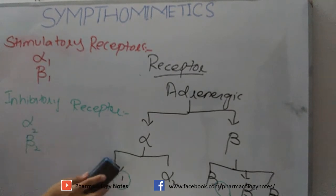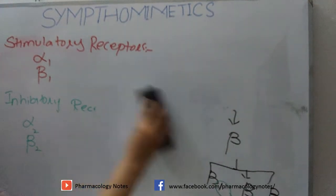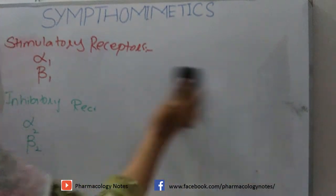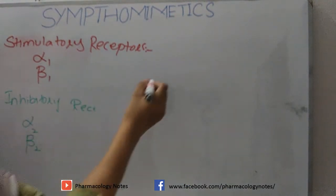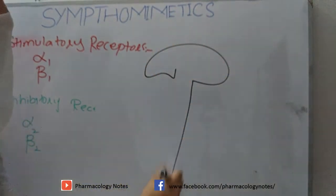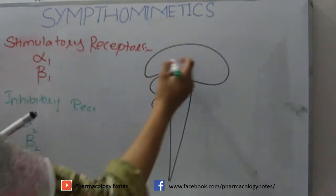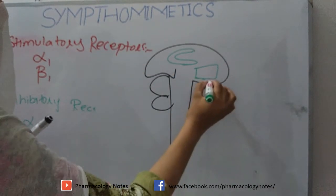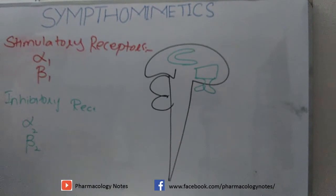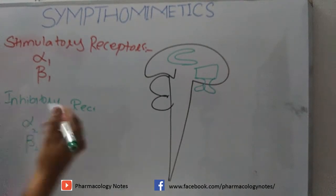We are talking about sympathetic outflow. From where does the sympathetic outflow originate? The center of this originates in the hypothalamus. There is a limbic system, and here is the hypothalamus where the pituitary gland is also present. This hypothalamus is responsible for sympathetic outflow.